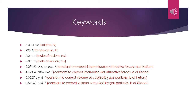From the table there are constants A and B. A is the constant to correct intermolecular attractive forces, and B is the constant to correct volume occupied by gas particles. For helium, A is 0.03421 litre² atm per mol², and for xenon 4.194 litre² atm per mol². For B of helium: 0.0237 litre per mol, and for xenon: 0.5105 litre per mol.